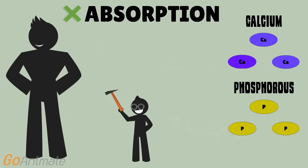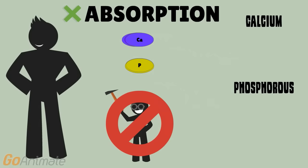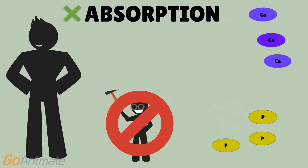So, even if you eat lots of foods that contain calcium and phosphorus, without enough vitamin D, you can't absorb them into your body.